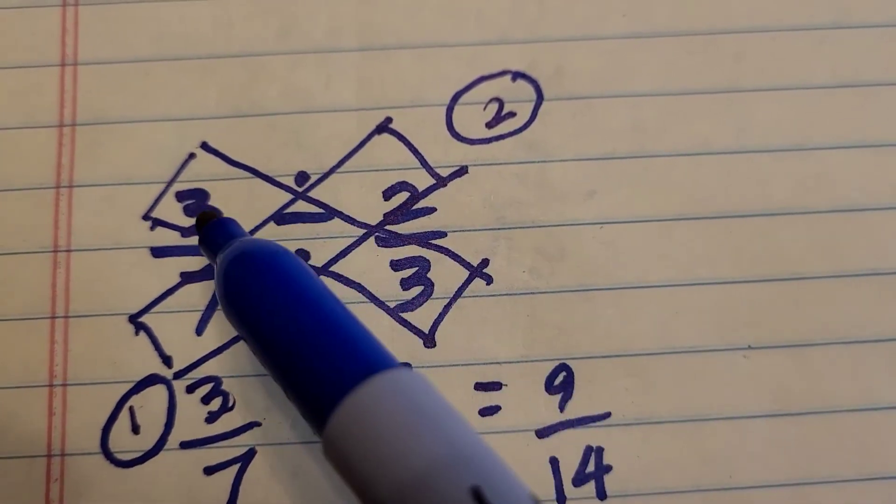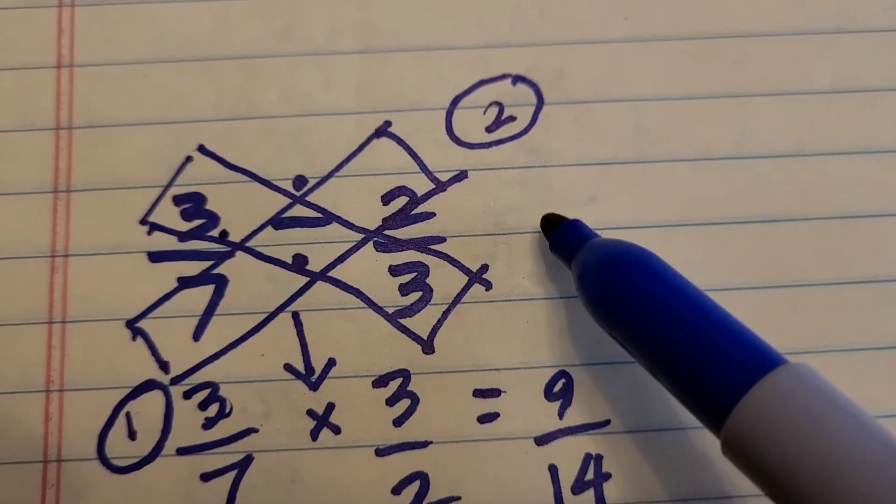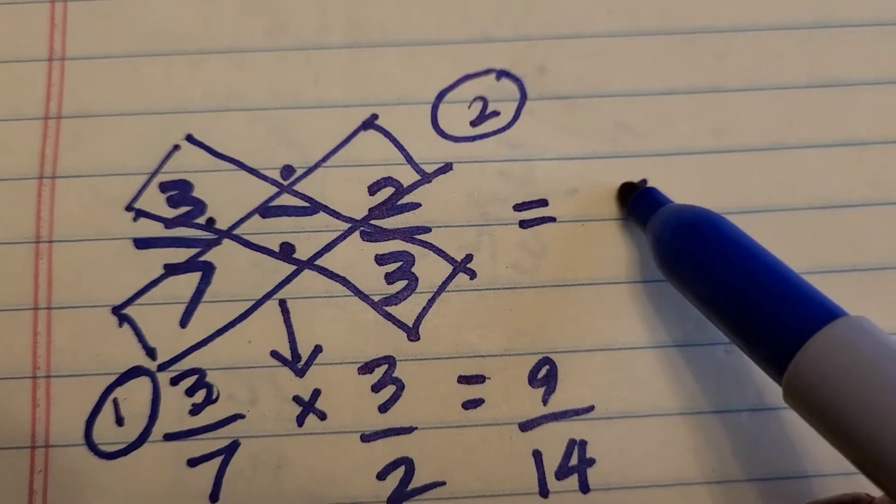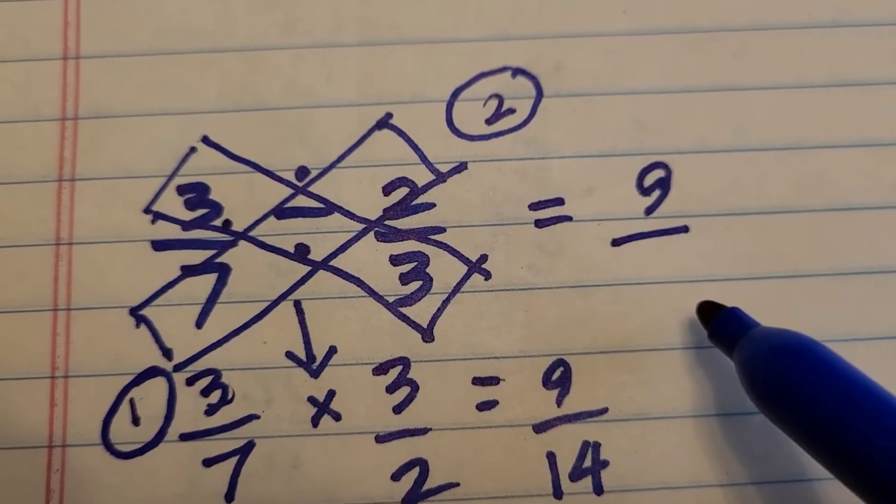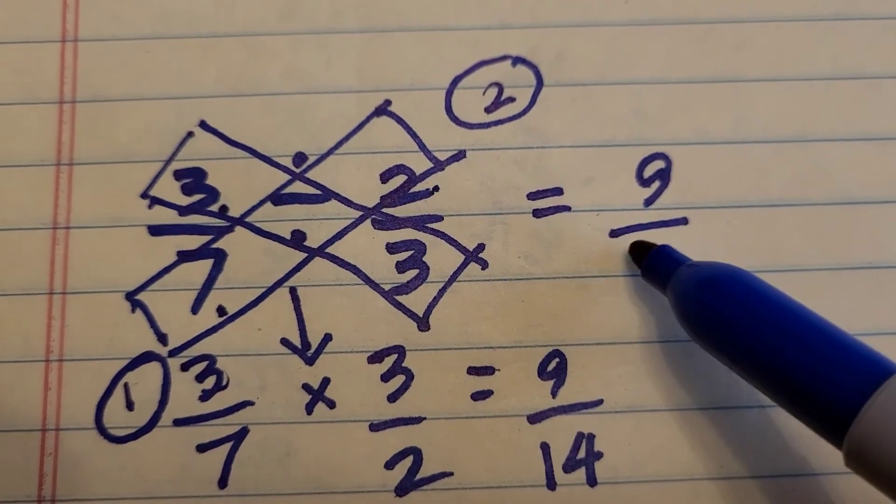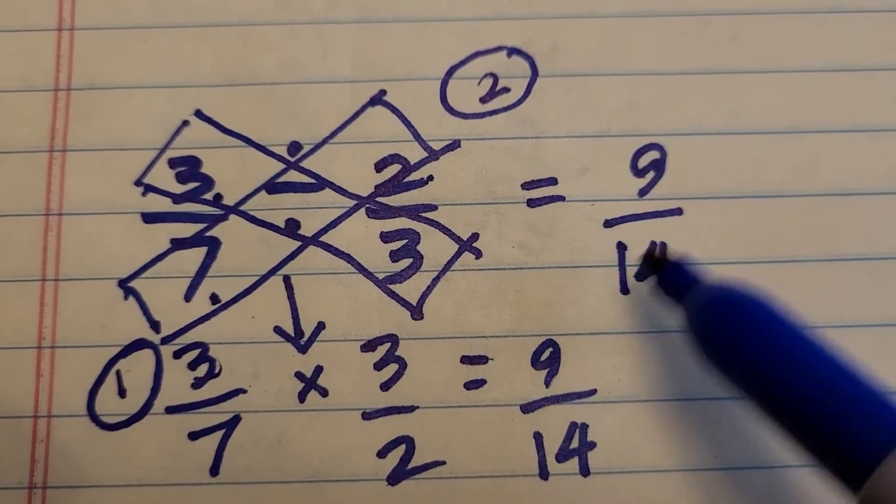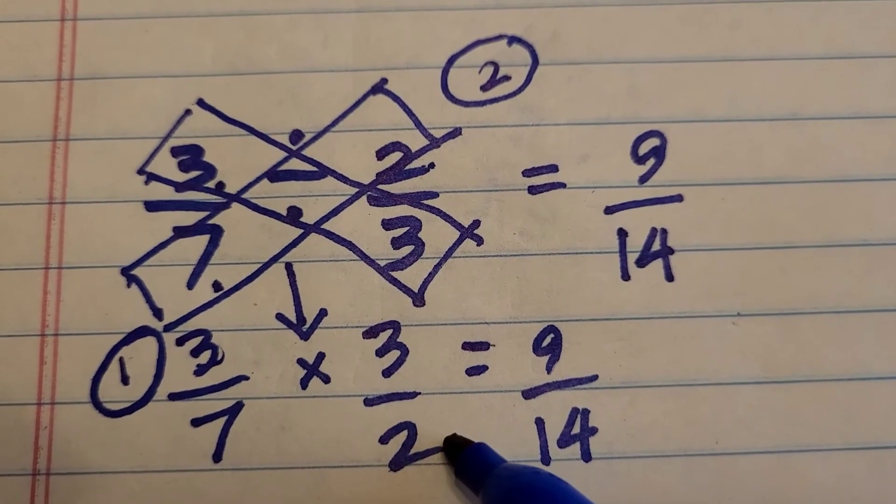Okay, so what we first do is starting from left to right, cross multiply 3 times 3, and that gives us 9, and that goes in the numerator or on top. And we cross multiply 7 times 2, which is 14. So that took us a lot less time than it did with the traditional method.